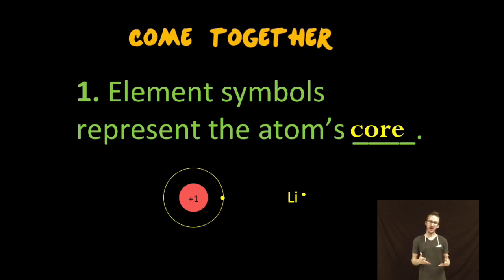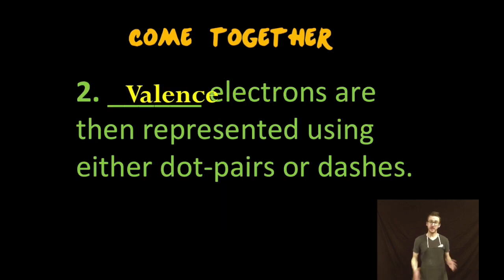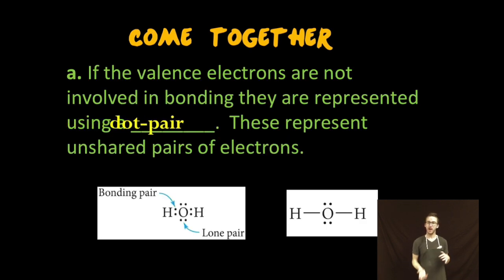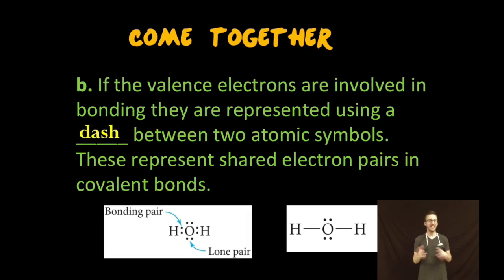The example on your screen gives you an example for lithium. Core charge, a plus one, replaced with the symbol. The valence electrons are then represented using either dot pairs or dashes, and we'll use a dot pair if those valence electrons are not involved in bonds, indicating that they're represented in unshared or non-bonding pair of electrons. However, we'll use a dash if those valence electrons are involved in a bond and they represent a shared or bonded pair of electrons.